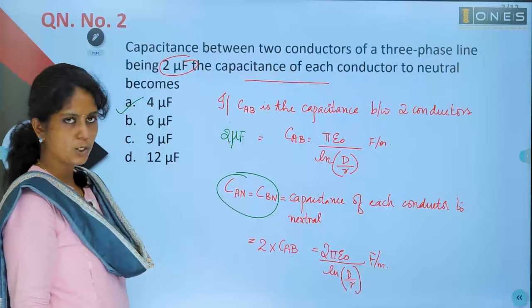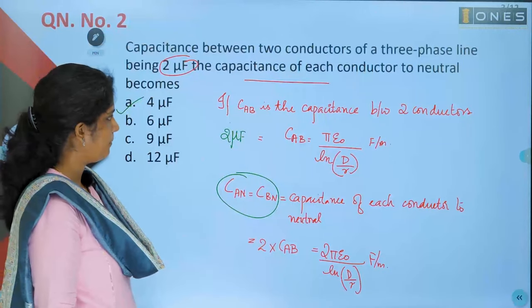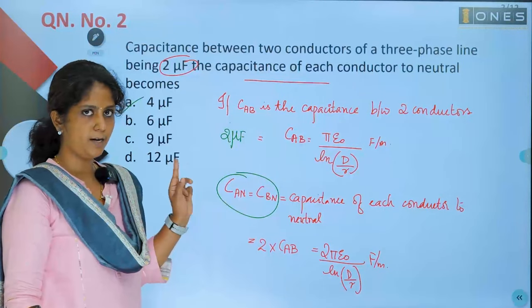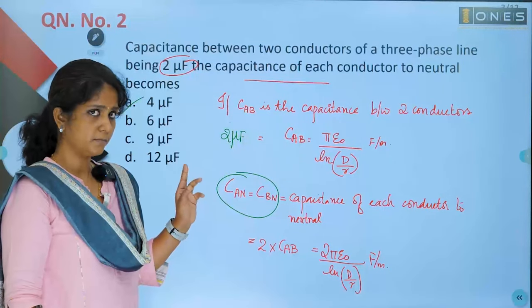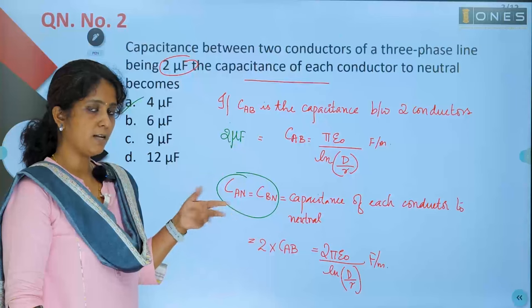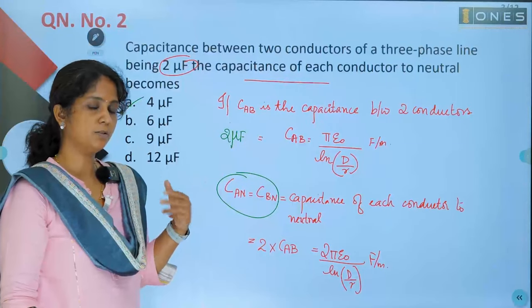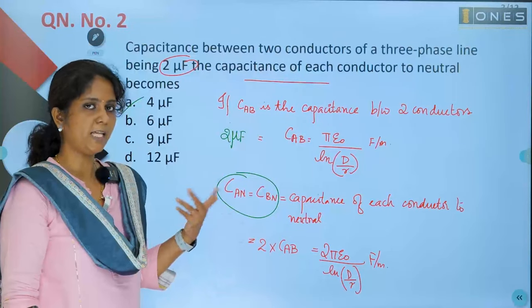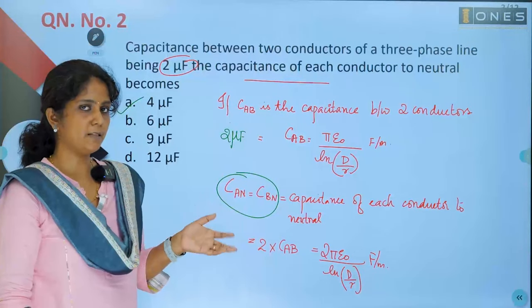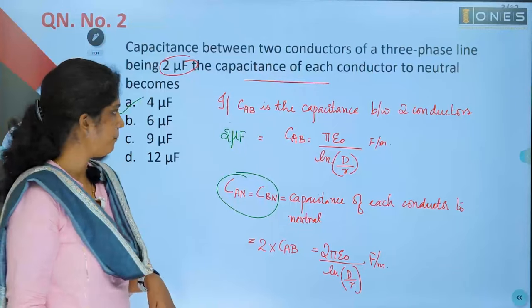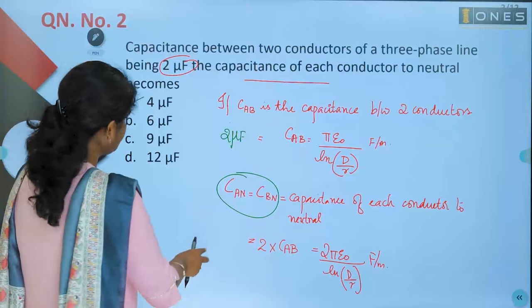Always remember: when two conductors have a certain capacitance between them, the capacitance of each conductor with respect to the neutral point is twice that value.